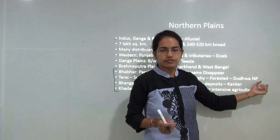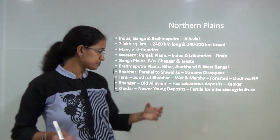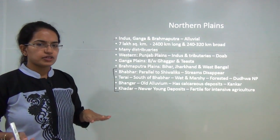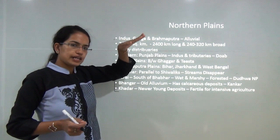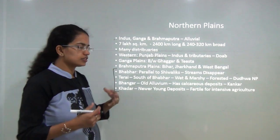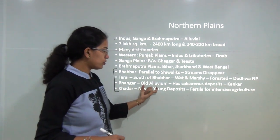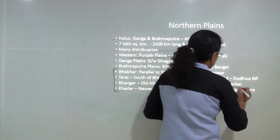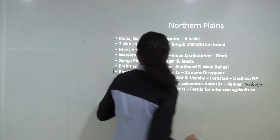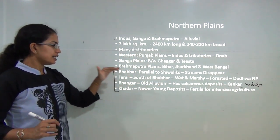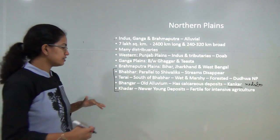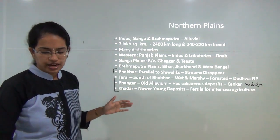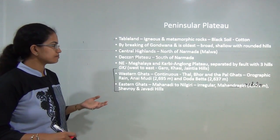The Tarai belt lies south of Bhabar. A common example of a wildlife sanctuary here is the Dudhwa National Park. Next is Bangar, and next to Bangar is Khadar. Bangar being on an upper layer is much older compared to Khadar, which has newer deposits. Bangar deposits contain calcareous deposits known as kankar nodules. Khadar, being much younger alluvium, is known for intensive agriculture and good crop production.